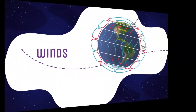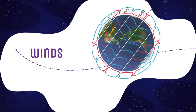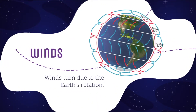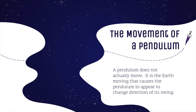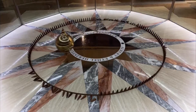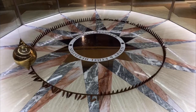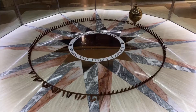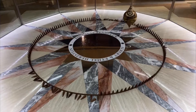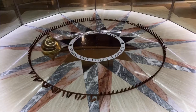That's pretty cool. Also, winds. Winds turn due to the Earth's rotation. Did you know that? The movement of a pendulum — a pendulum does not actually move. It is the Earth moving that causes the pendulum to appear to change direction of its swing. This is a pendulum that is in a museum in Houston, Texas.